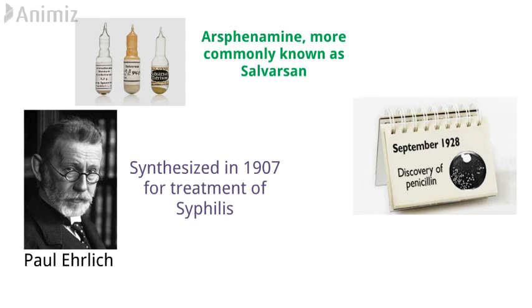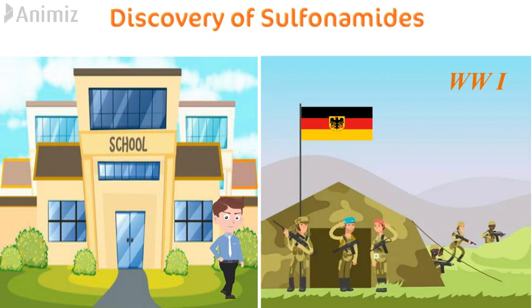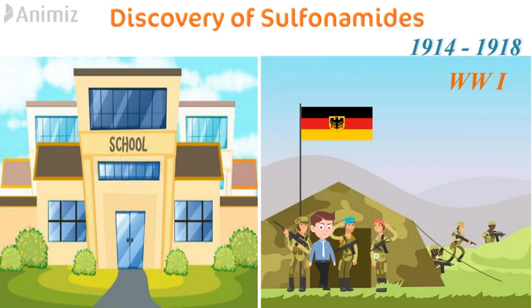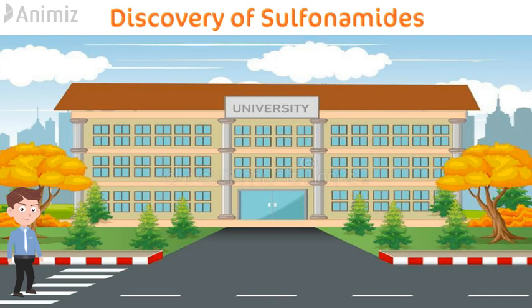Now let's see the story of sulfonamide discovery. There was a boy in Germany who left his studies and joined the German military during World War 1 in 1914. During that time he served through many military hospitals and was surprised to see that the number of deaths from infections was more than the number of deaths from bombs. Once when he got back home, he decided that he would find a general cure for bacterial infections. He completed his education and became the director of the Institute of Experimental Pathology at IG Farben.